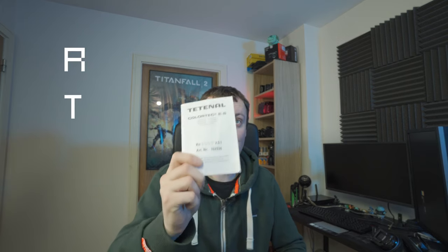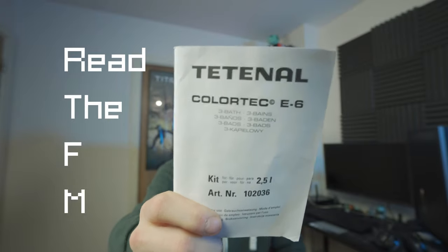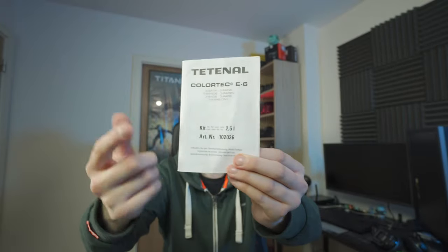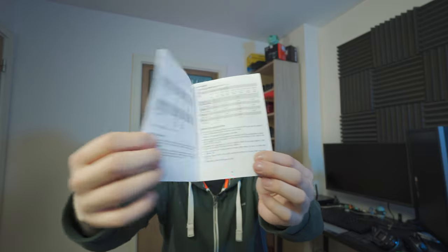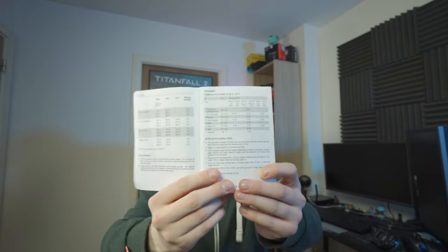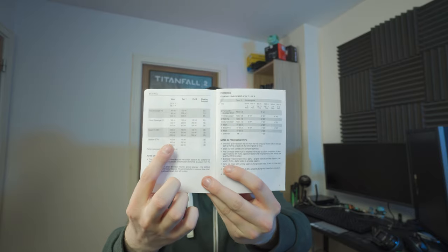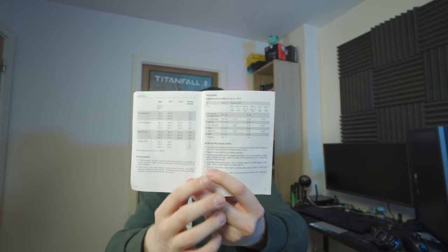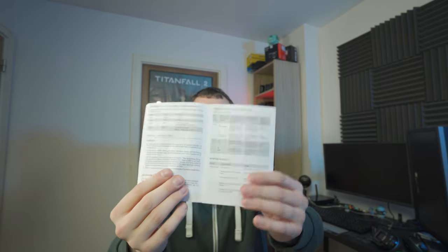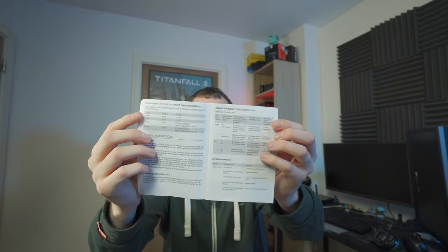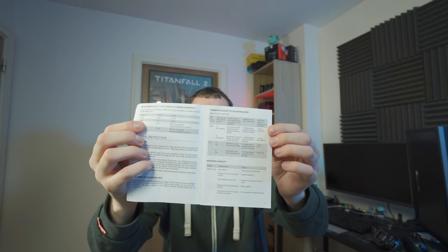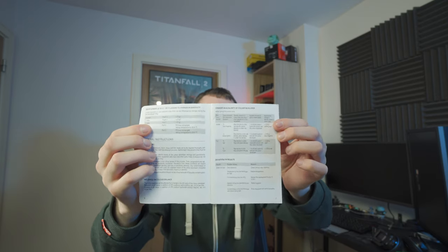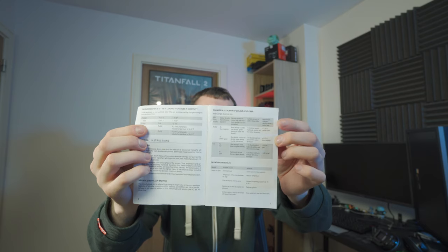Secondly, when it comes to E6 processing, there's one thing you should always do and that is RTFM—read the freaking manual. This is the instruction that comes in the box. Make sure to read it. It contains everything you need including the mixing concentrations for different types of solutions, your processing times depending on how many rolls you've run, how to push and pull process, and also a really good troubleshooting guide for issues and problems. If your slides turn out color shifted, this will tell you how to fix them. So once again, read the freaking manual first. And with that said, let's get processing.